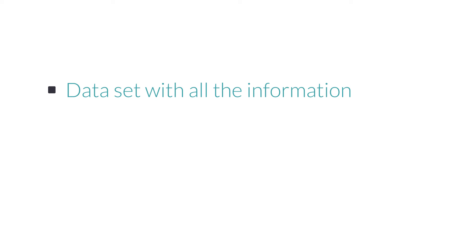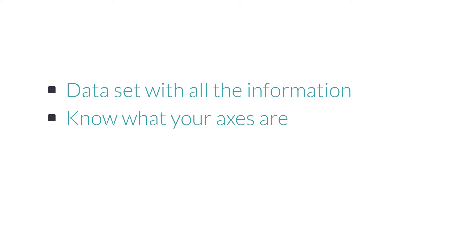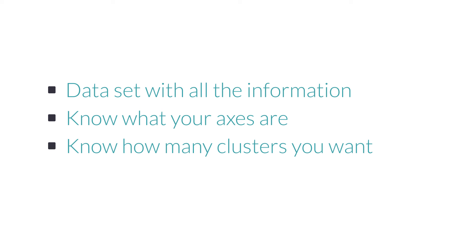To recap, when you want to make groups out of your data, you can use k-means clustering. What do you need in order to use this algorithm? First, you need a data set with all the information in it. Second, you need to know what your axes are — for this example, we used two axes: household income and amount of money spent on toys. You could also cluster on three, four, or more dimensions. And finally, you need to know how many clusters you want. Sometimes there will be a hard cap — marketing may say they can handle at most five segments. Other times, you may want to let the software tell you how many clusters are best for your data. That's how clustering analysis is done.